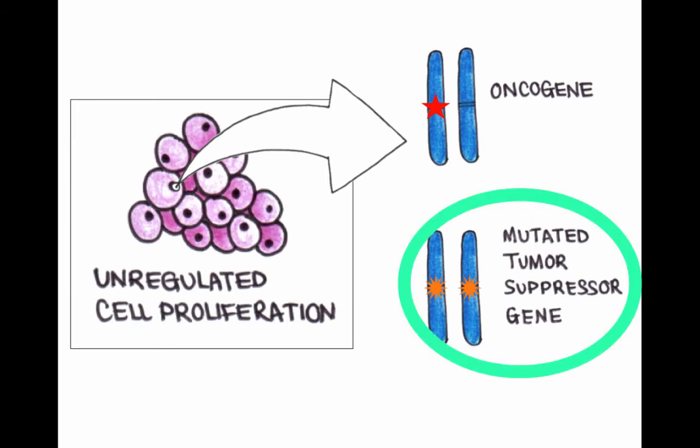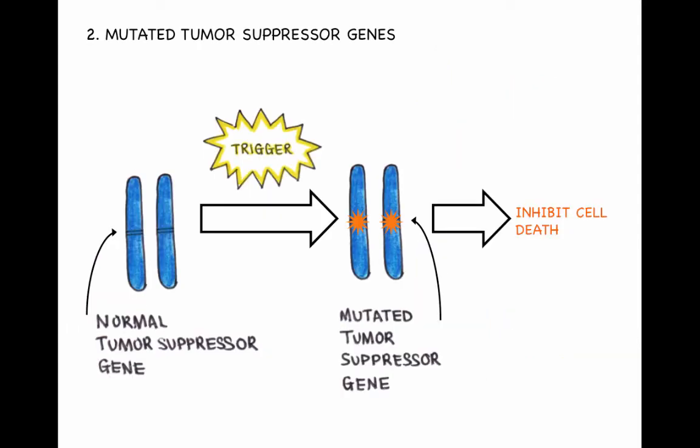Now let's look at the second contributor to oncogenesis, the mutated tumour suppressor genes. Normally, within our chromosomes, we have tumour suppressor genes. These genes prevent inappropriate cell growth by promoting cell death. This is our body's way of preventing or deleting mistakes that would lead to cancer.